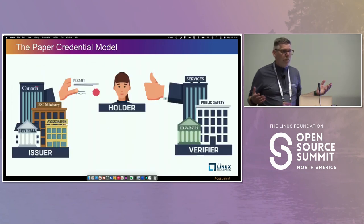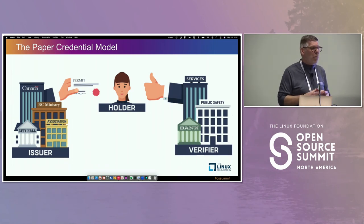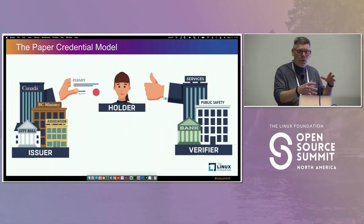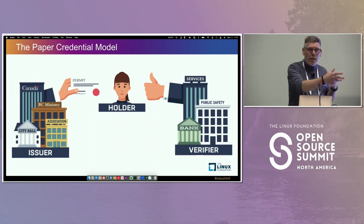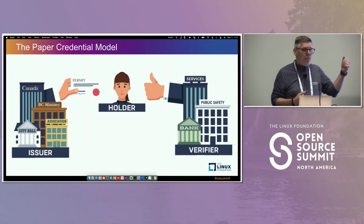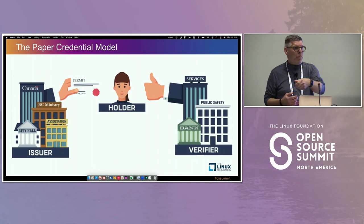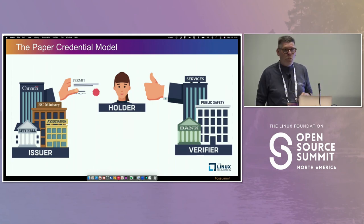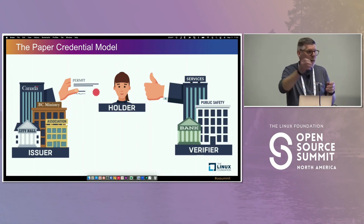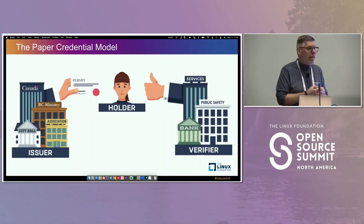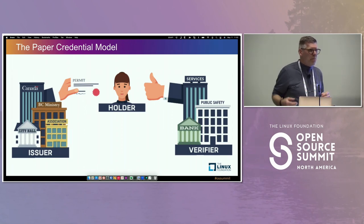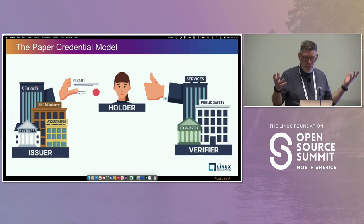We've lived for 2,000 to 2,500 years with paper credentials. Paper credentials have a model you should recognize. An issuer gives you a piece of paper because of some relationship you have with them — the issuer is some sort of authority. You tuck it away in your wallet, or perhaps in your filing cabinet. Sometime later, in an entirely separate transaction, a verifier says, show me those pieces of paper, and you bring them out and show them.